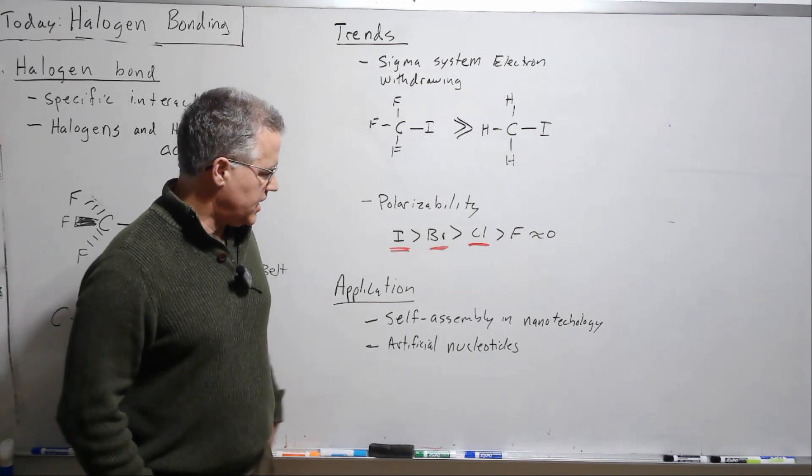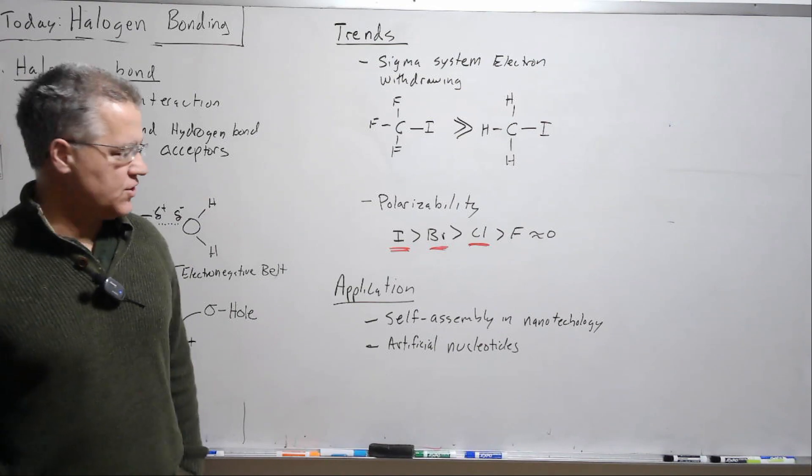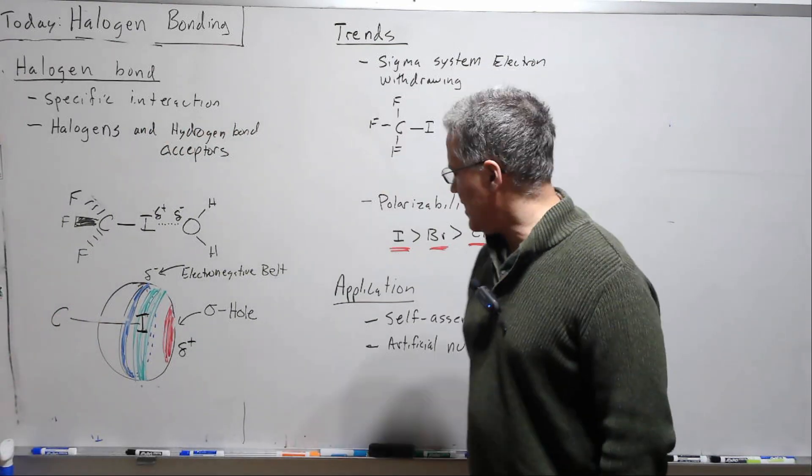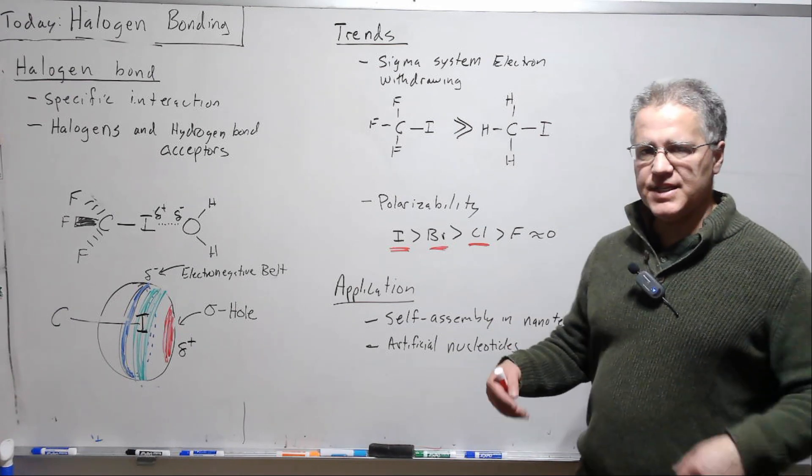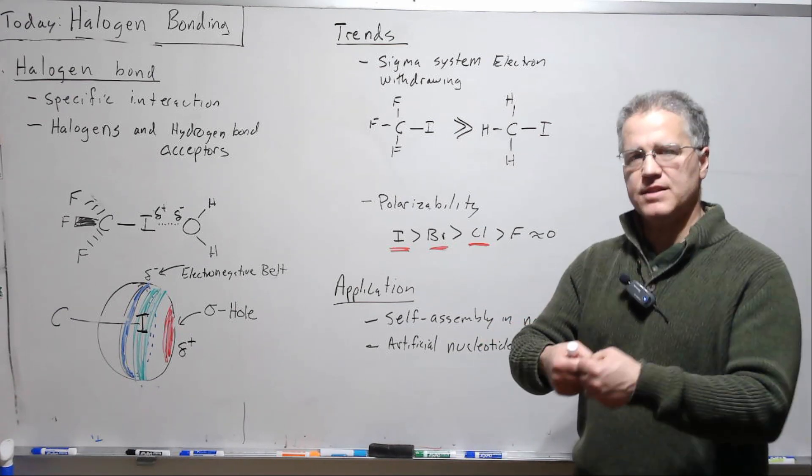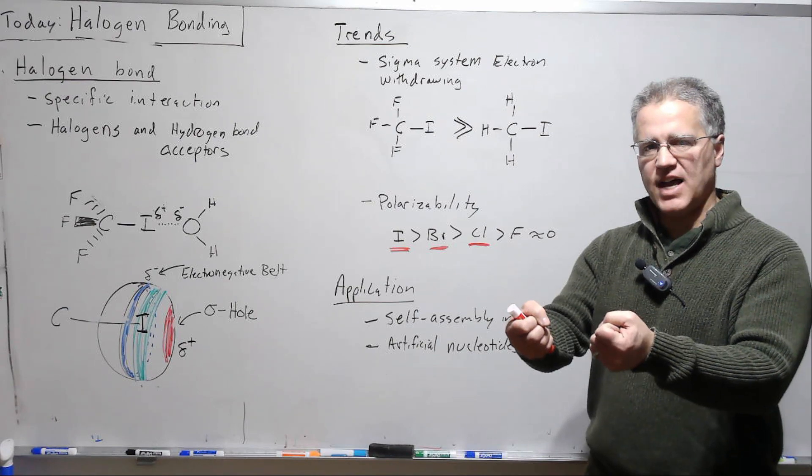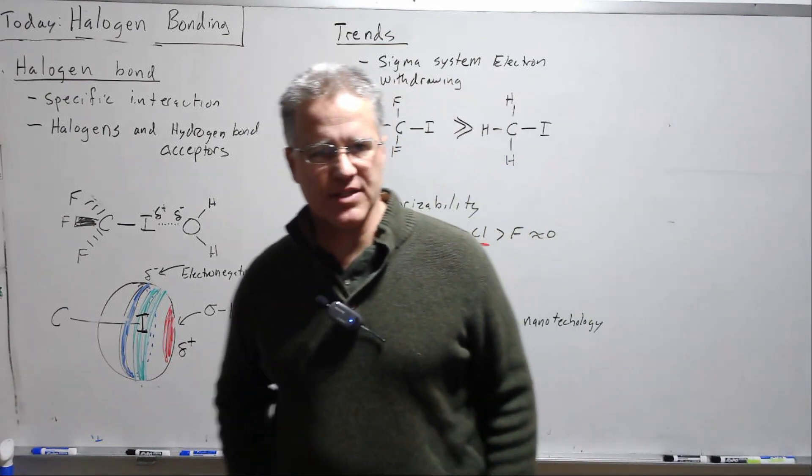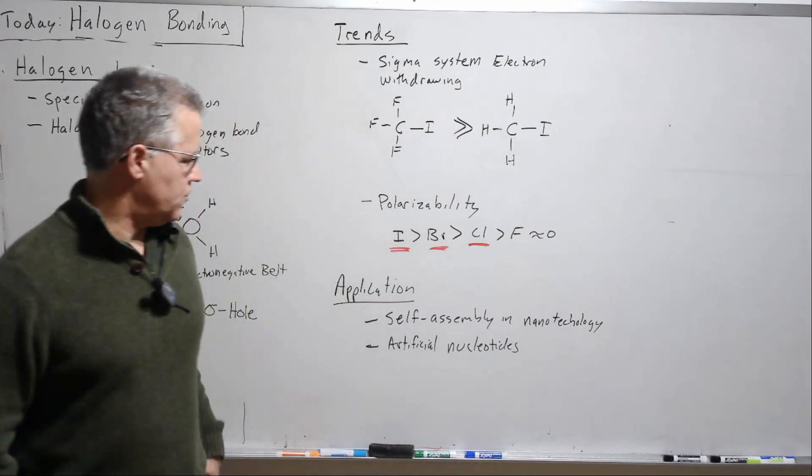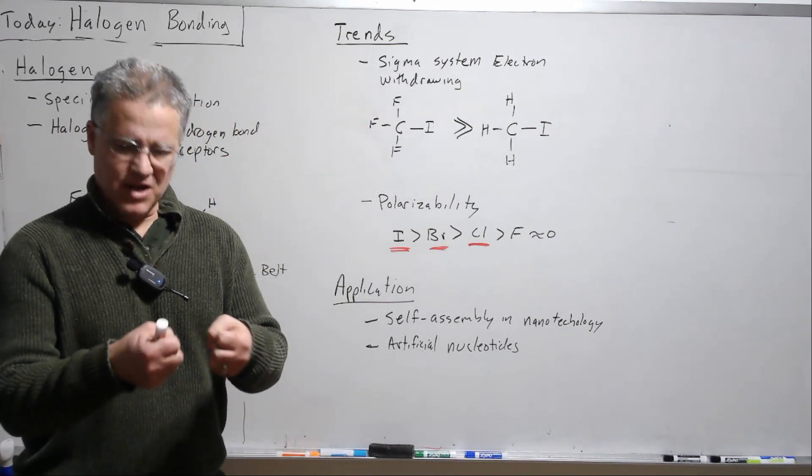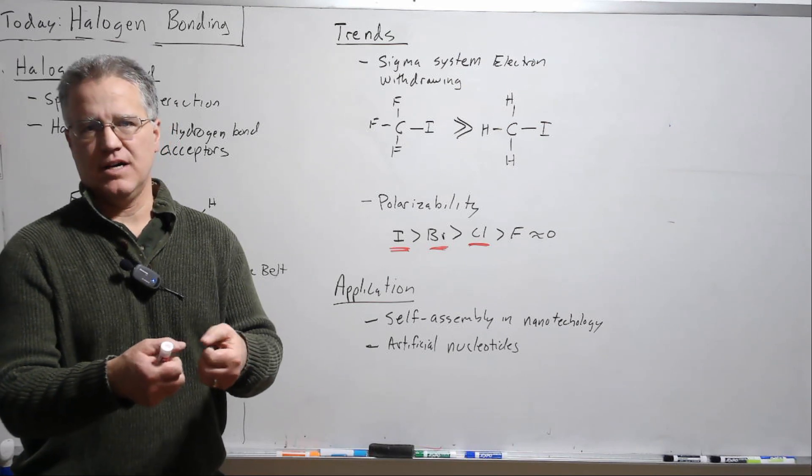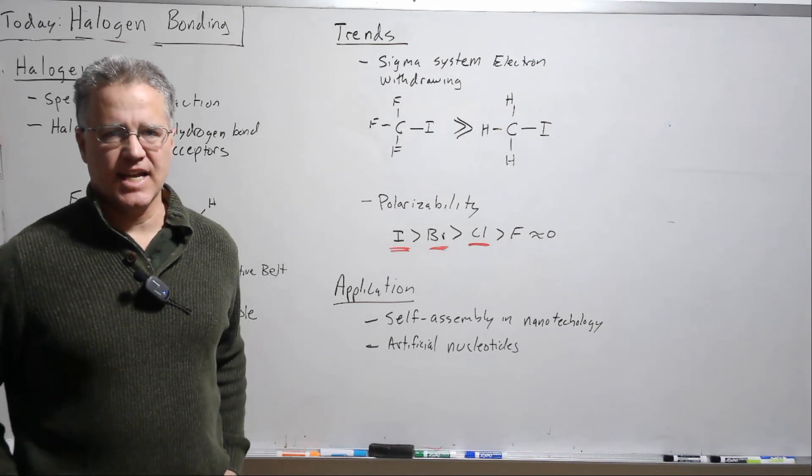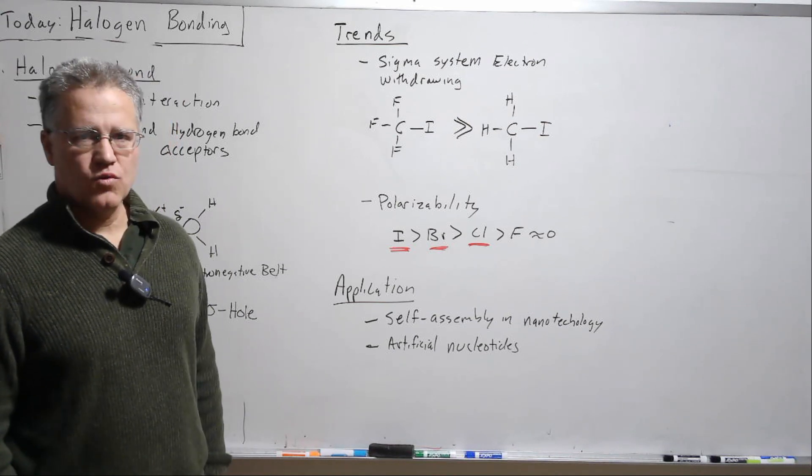But also in biology, there's some interesting applications with artificial nucleotides. So we know that nucleotides and DNA interact via hydrogen bonding. But this can be synthesized to include iodines and bromines, I believe, to become nucleotides and actually be incorporated into bits of DNA. So some very interesting work being done there.